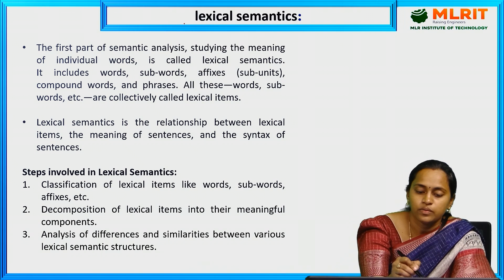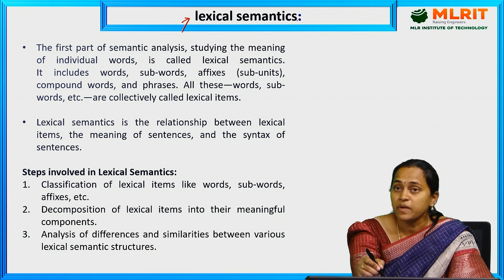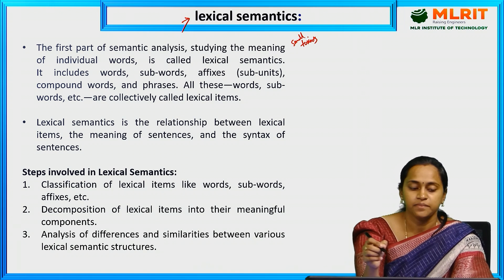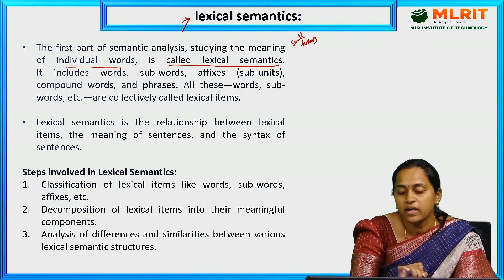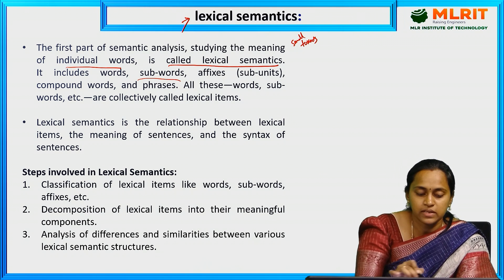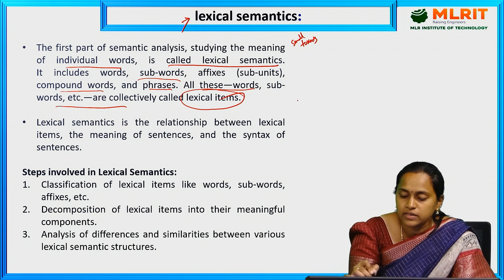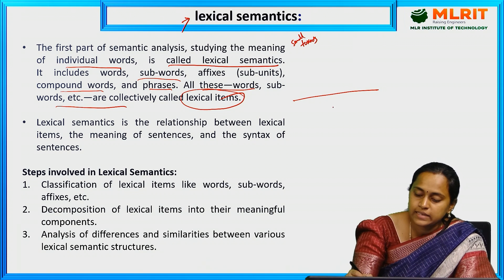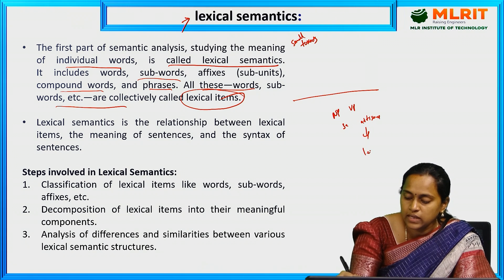Now let us look at lexical semantics. The first part of semantic analysis — studying the meaning of individual words — is called lexical semantics. We have to understand the meaning of individual words, sub-words, affixes, compound words, and phrases. All these are collectively called lexical items. A sentence contains noun phrases, verb phrases, subjects, objects, affixes, and prefixes — these are all called lexical items.